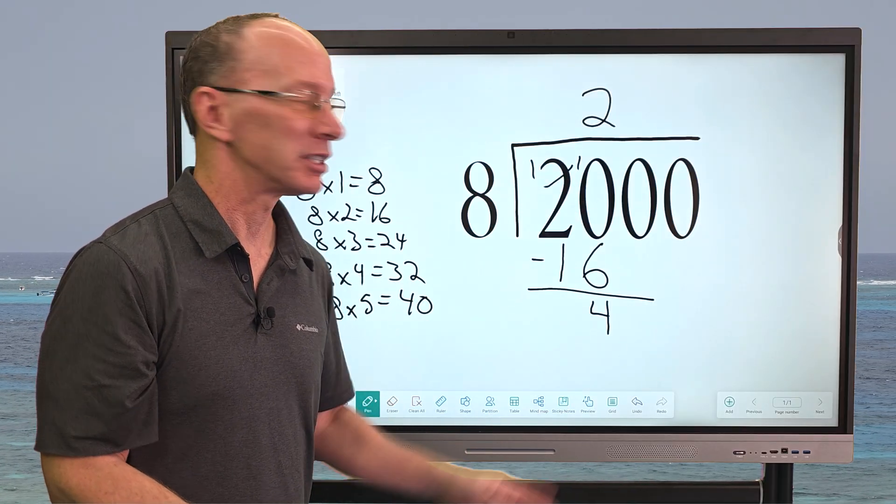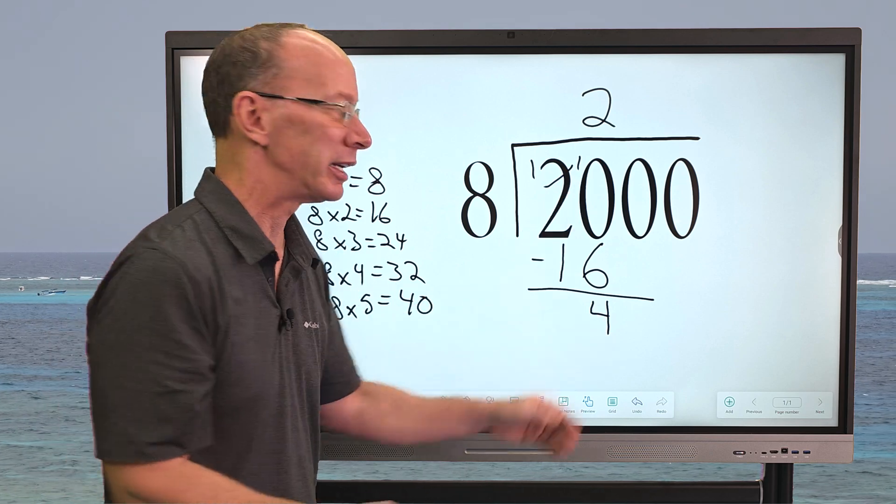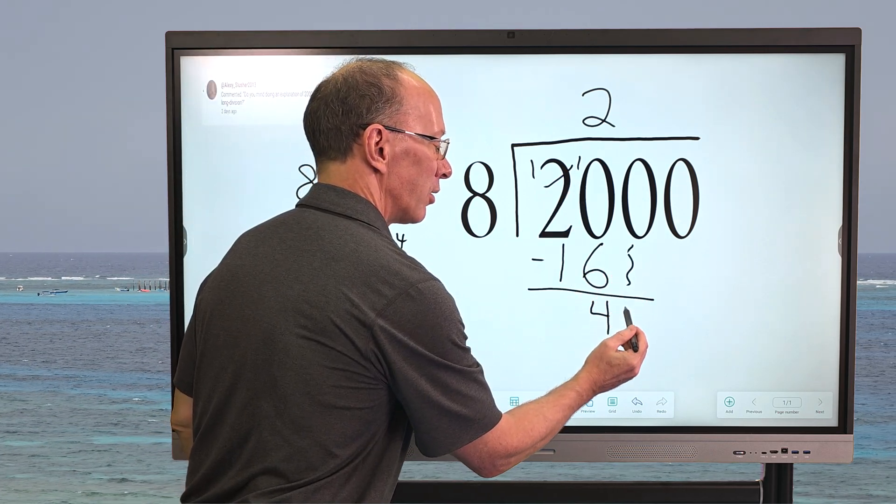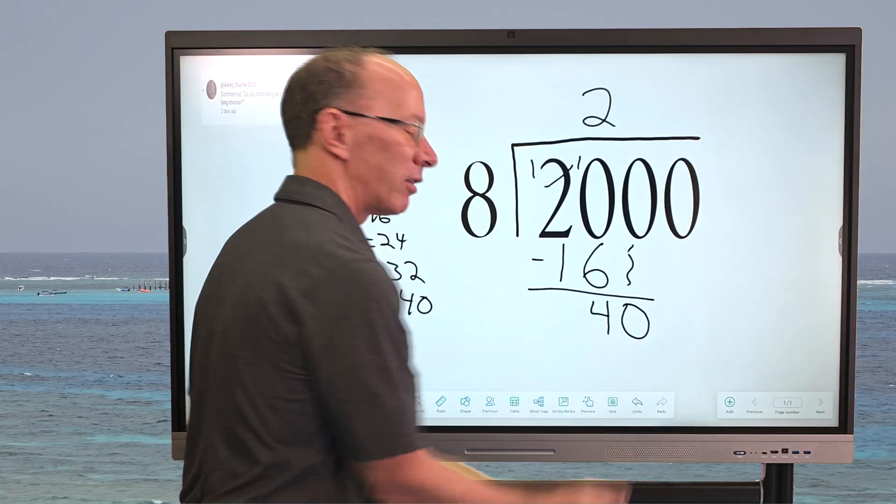Now our next step is to take the next number and just drop it down. Our next number is 0. We drop that all the way down here. And now we have 40.